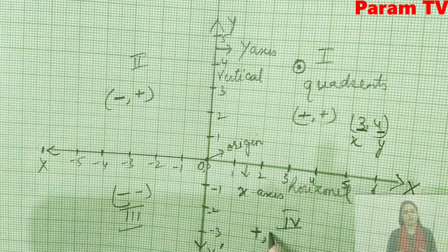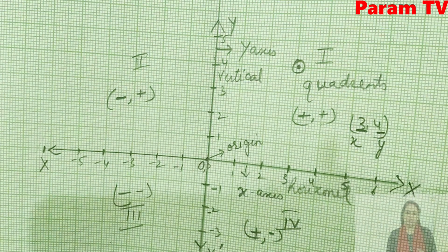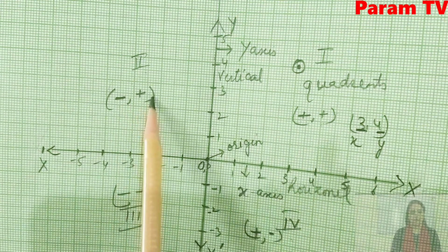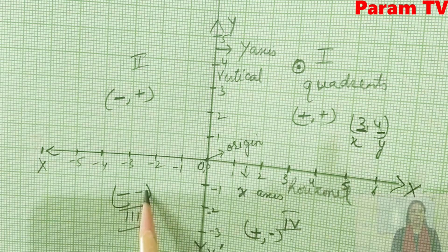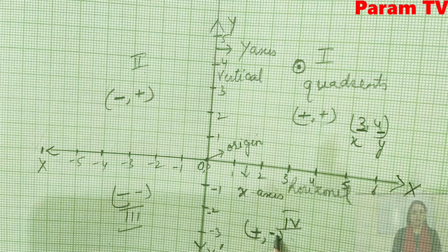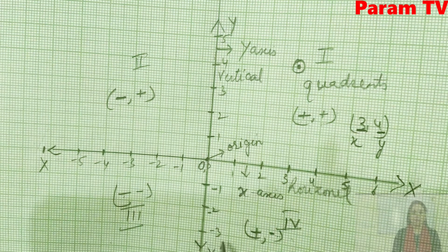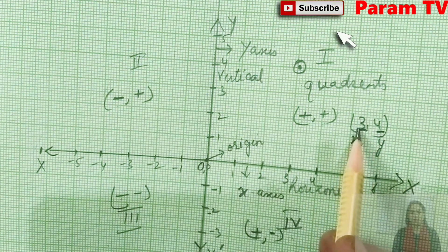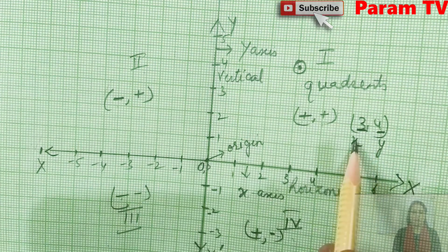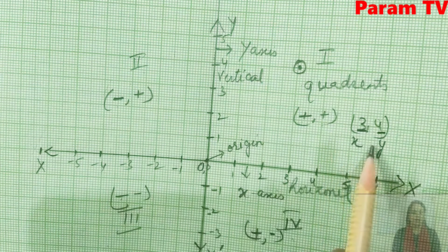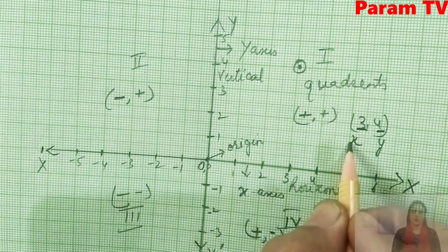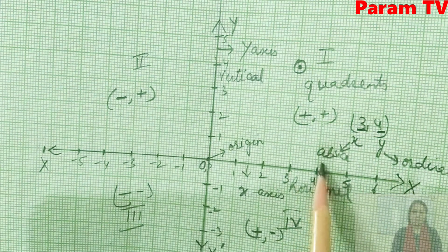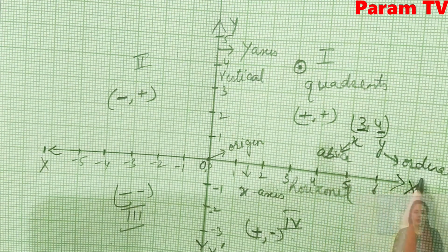In the quadrants: first quadrant — both x and y are plus (positive). Second quadrant — x is negative, y is positive. Third quadrant — both x and y are negative. Fourth quadrant — x is positive, y is negative. This is the method to plot points.